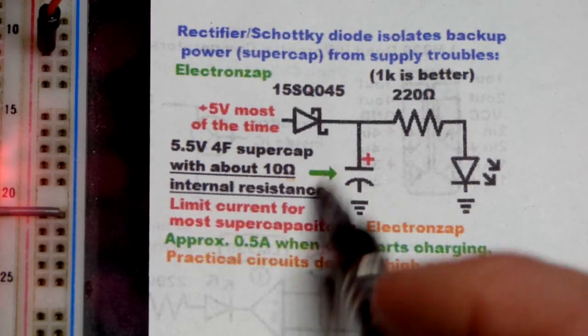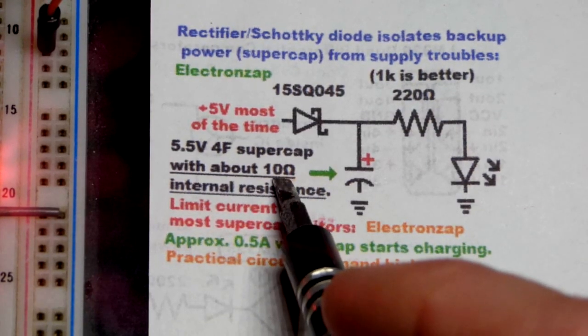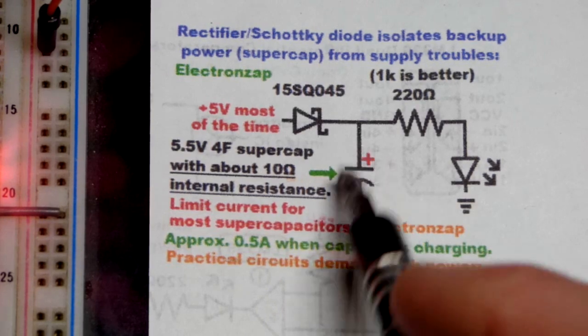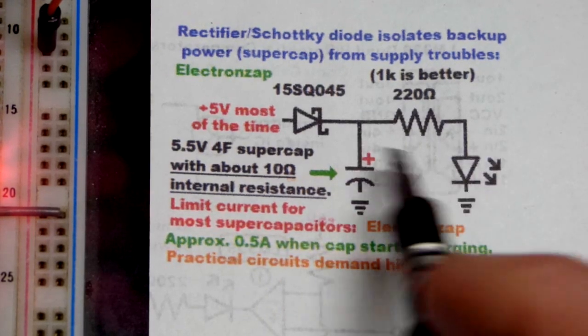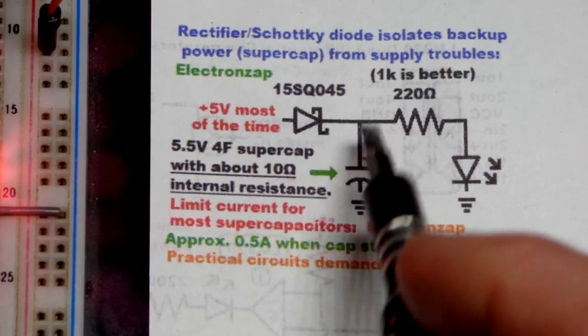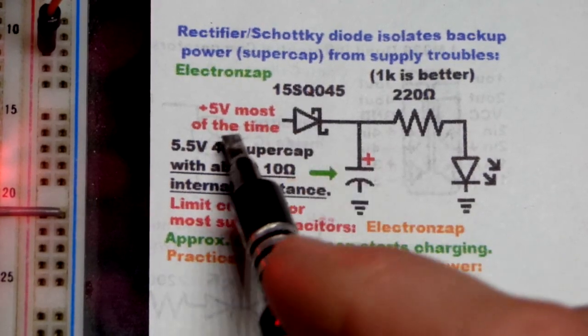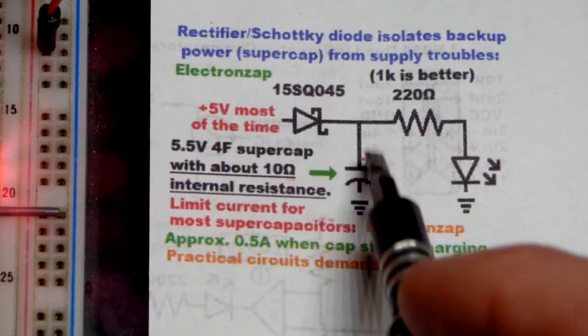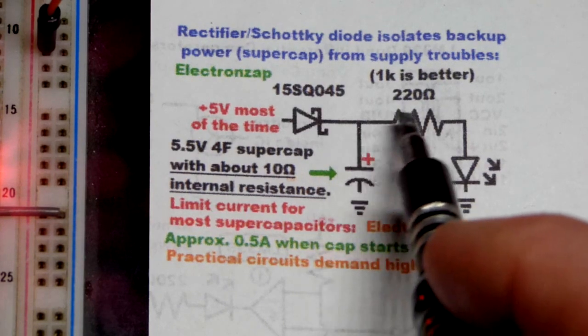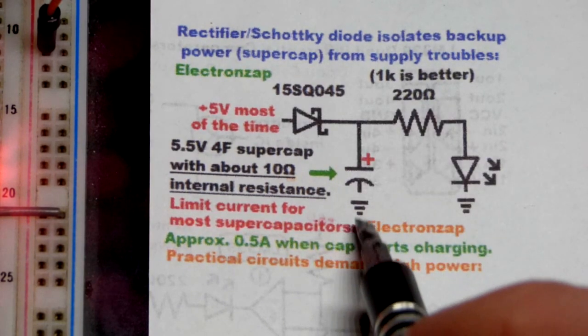Just realize that the super capacitor, it looks like about 10 ohms of resistance internally, will add up when it comes to powering the load. But usually you got plenty of time to charge it. That's not a big issue. But you don't want to lose too much power powering certain loads.